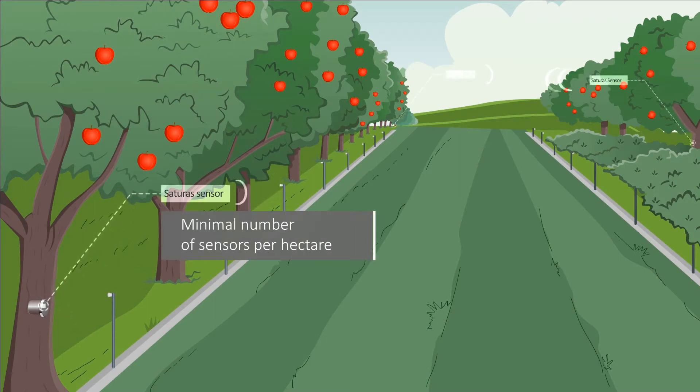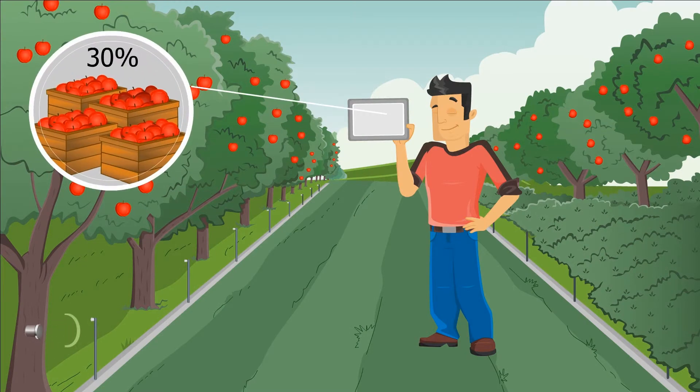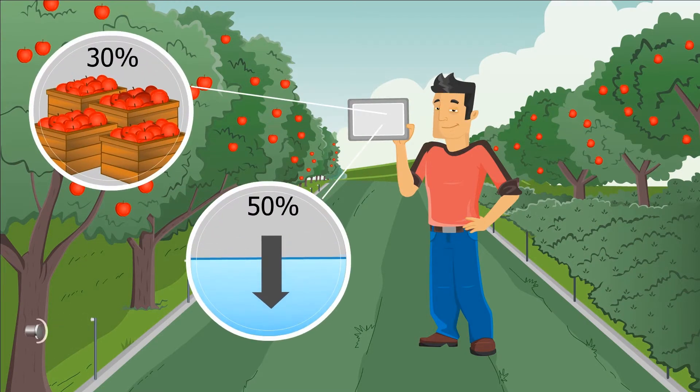Using just a minimal number of sensors per hectare, farmers have a cost-effective solution to make informed irrigation decisions to increase yields by up to 30 percent and to save up to 50 percent of water use.